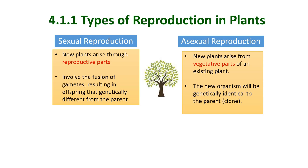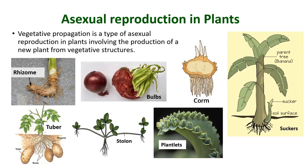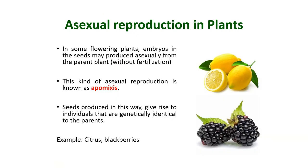Asexual reproduction in plants has two main types. The first is vegetative propagation, a type of asexual reproduction involving the production of a new plant from vegetative structures. Examples of vegetative structures include rhizomes, bulbs, corms, stolons, plantlets, and tubers.